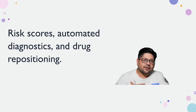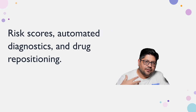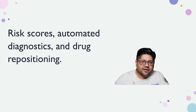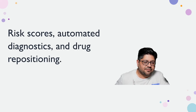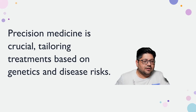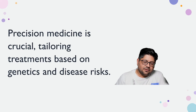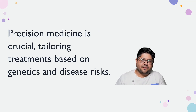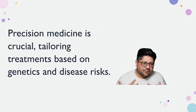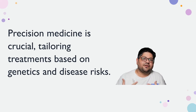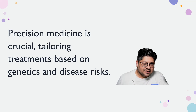Here are some applications. Data science can create risk scores which stratify the population into different segments for targeted prevention strategies. It can automate diagnostics, which can be revolutionary in reducing the cost of diagnostic procedures. It can ensure personalized treatment through drug repositioning. Precision medicine is crucial to tailor treatment based on genetics and disease risk, and it is through the power of data science that you are able to ensure everyone gets the exact treatment, exact drug, and exact timing needed.